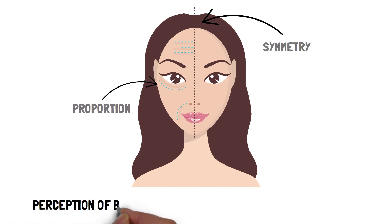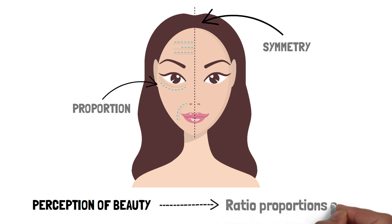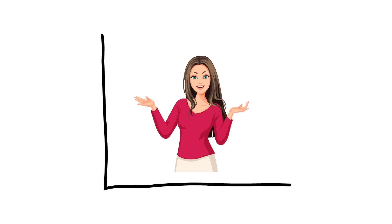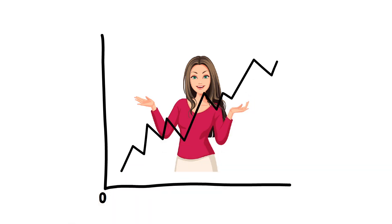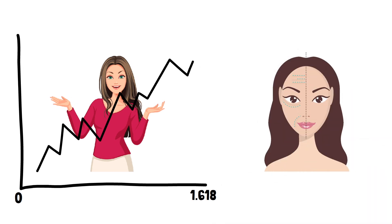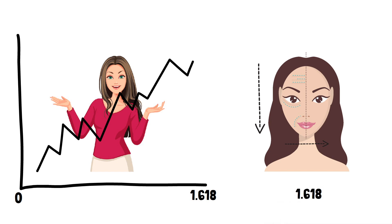Cross-cultural research has shown that no matter the ethnicity, our perception of beauty is based on ratio proportions of 1.618. As a face comes closer to this ratio, it is perceived as more beautiful. As an example, the ideal ratio of the top of the head to the chin versus the width of the head should be 1.618.